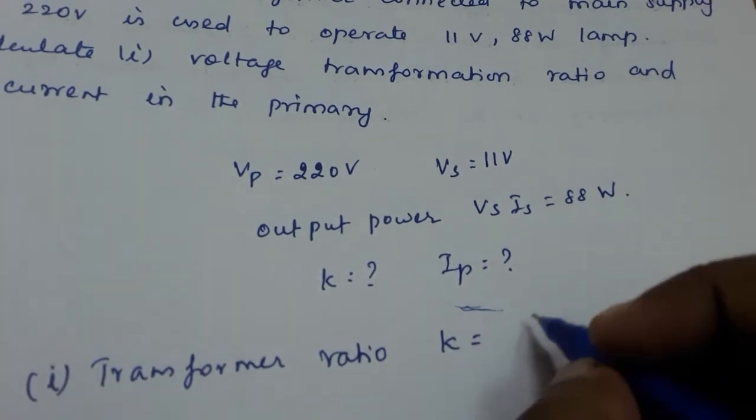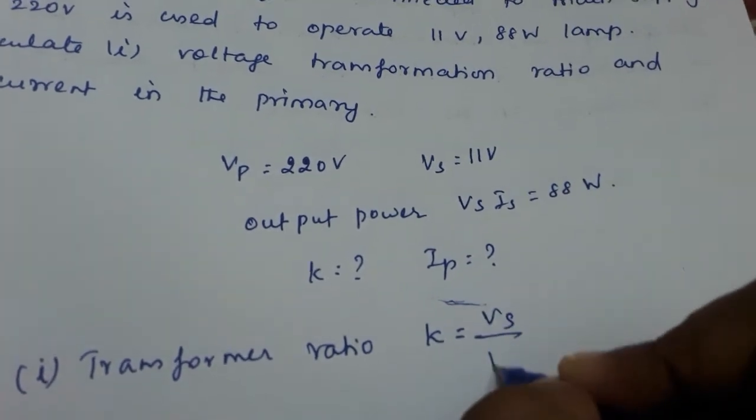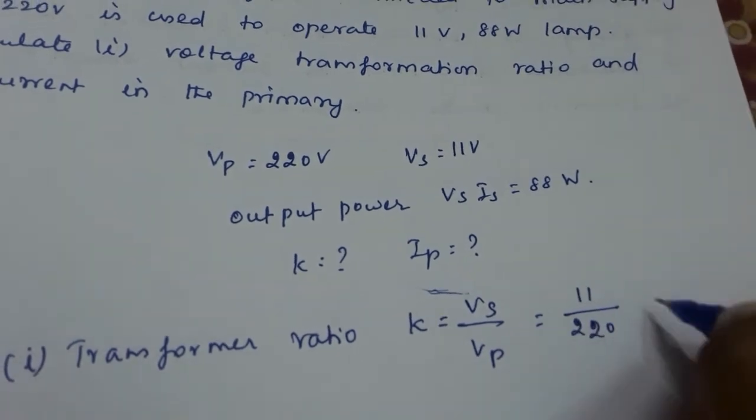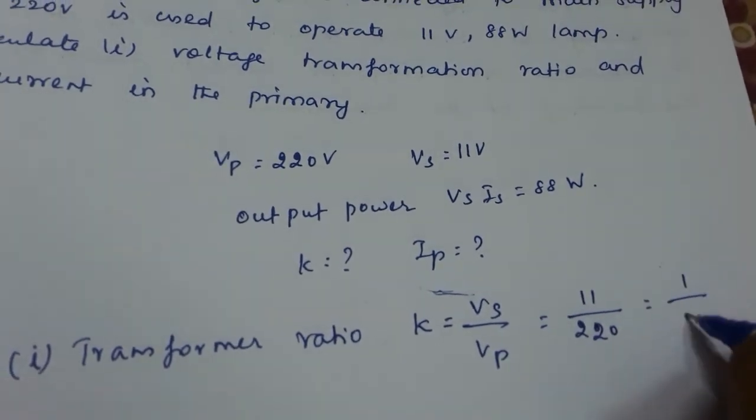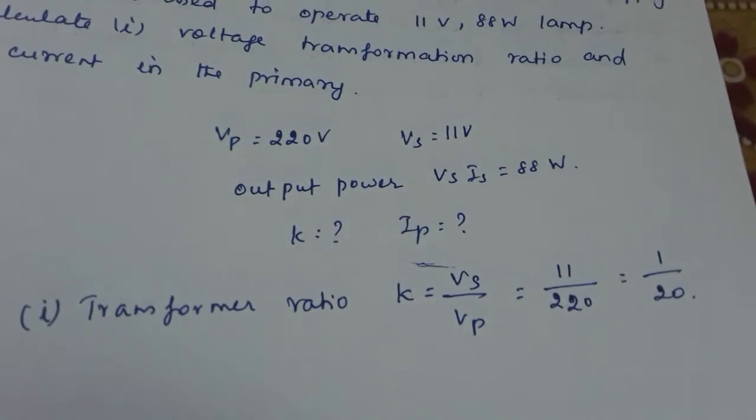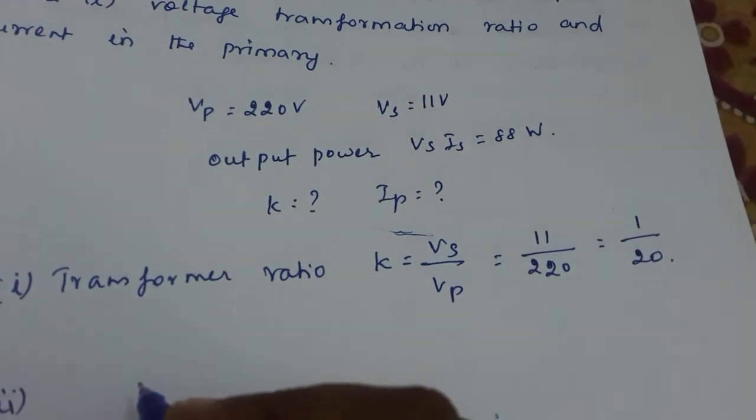k is equal to Vs by Vp. Vs is 11 volt, Vp is 220 volt, that is nothing but 1 by 20. That is the k value. Second, we have to find out the primary current.